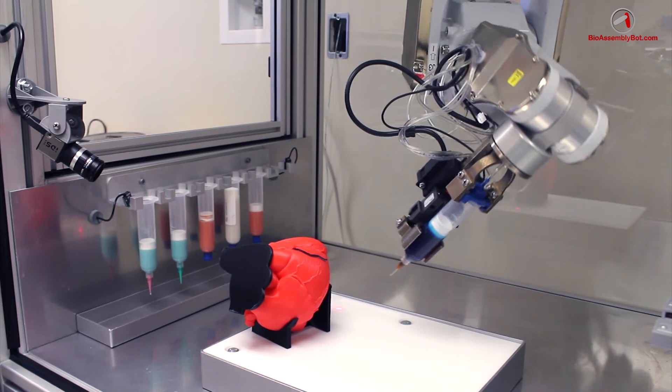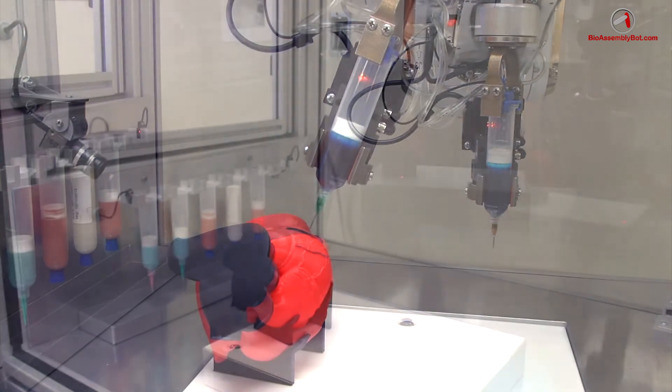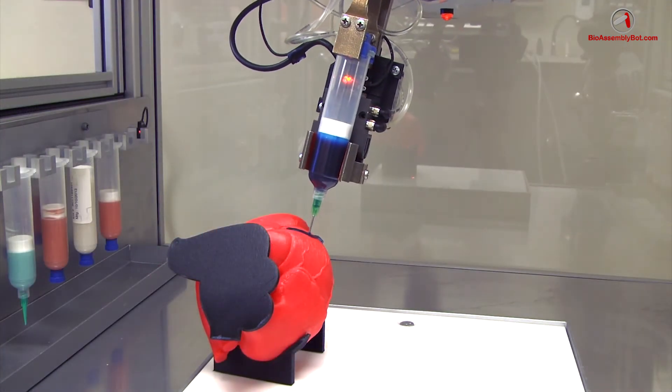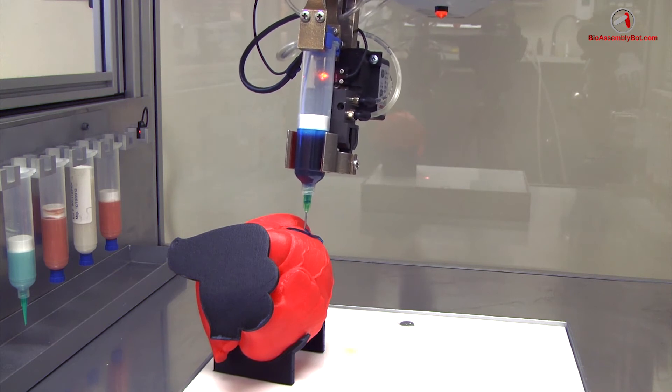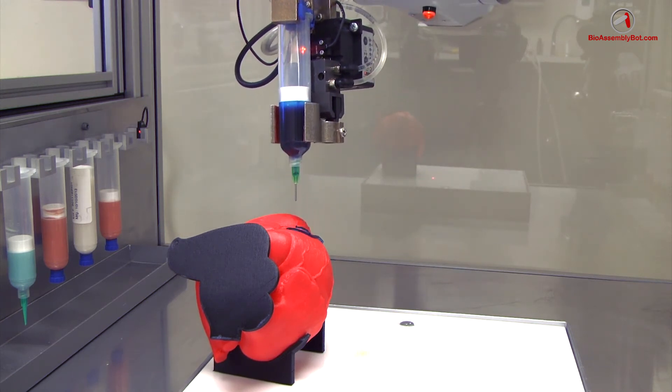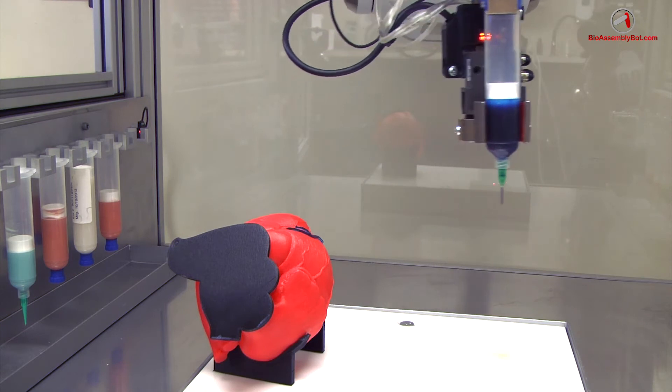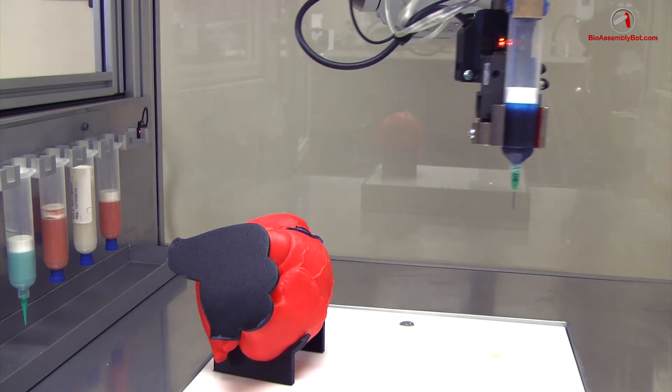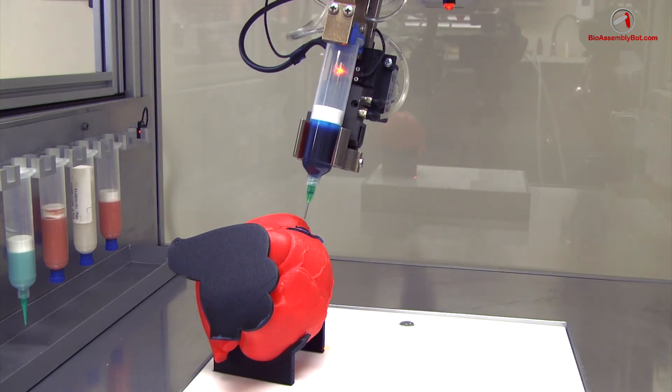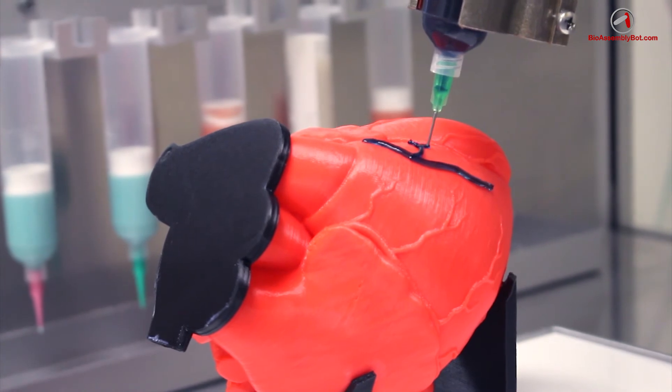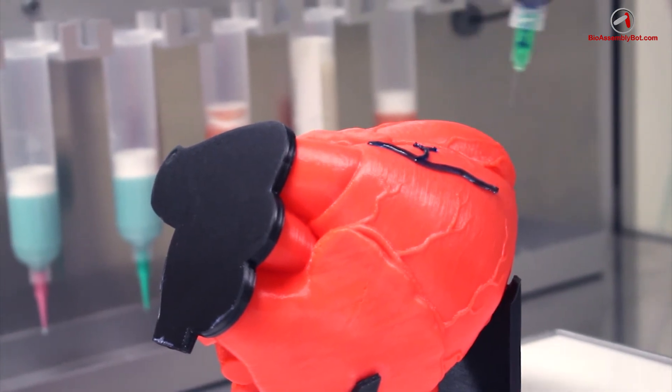Here, the large caliber feed vessel, or artery, is printed first, and now after going over and retrieving the smaller caliber needle cartridge component, the smaller vessel branches are added, including off the main artery as well as off the smaller leading vessels.